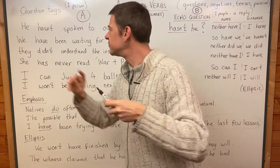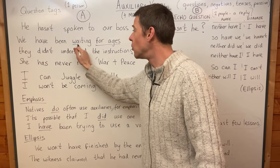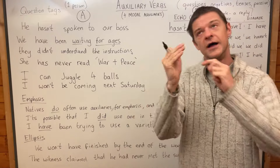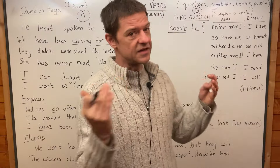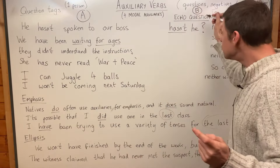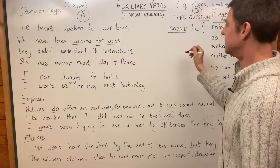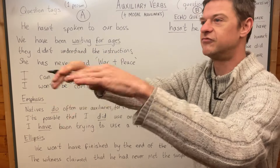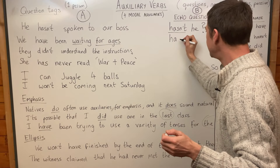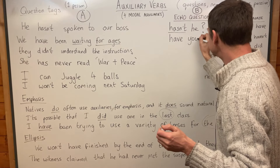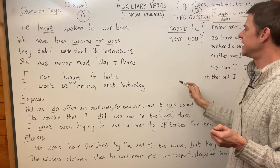Now for another example — again two people speaking. Someone says 'We have been waiting for ages.' Remember: present perfect continuous with a long duration uses 'for' — 'for ages.' Someone says that, and then person B replies. You might reply 'Have you?' — responding to that person talking about their group. 'Have you been waiting for ages?' — just 'Have you?' like that.